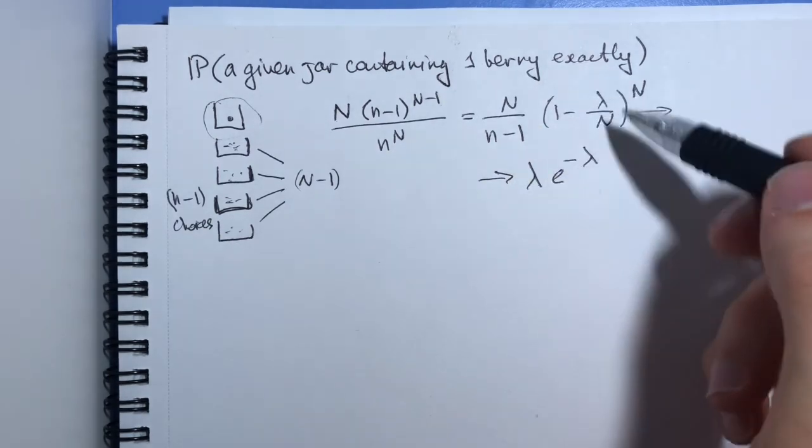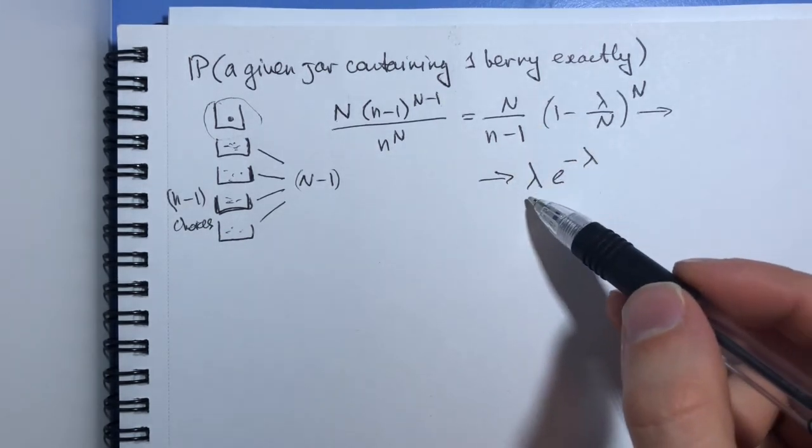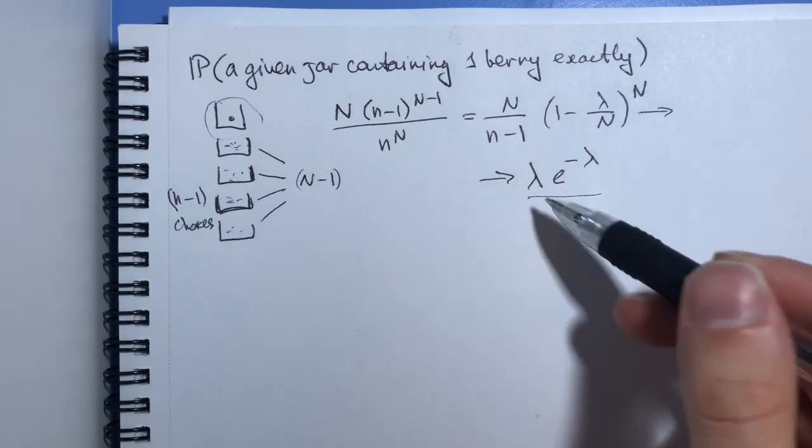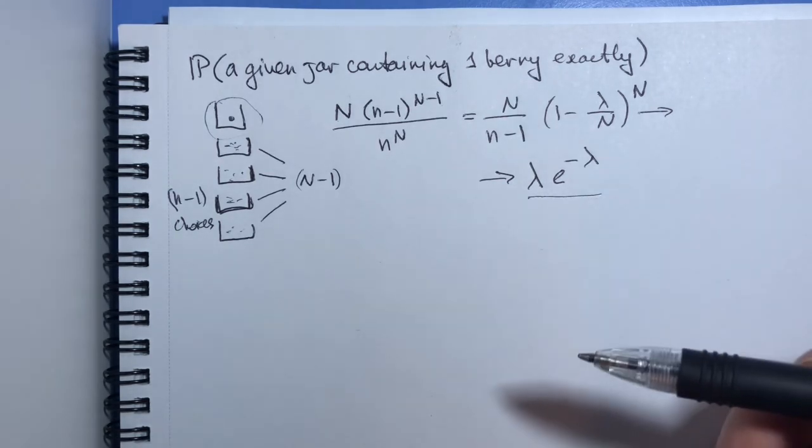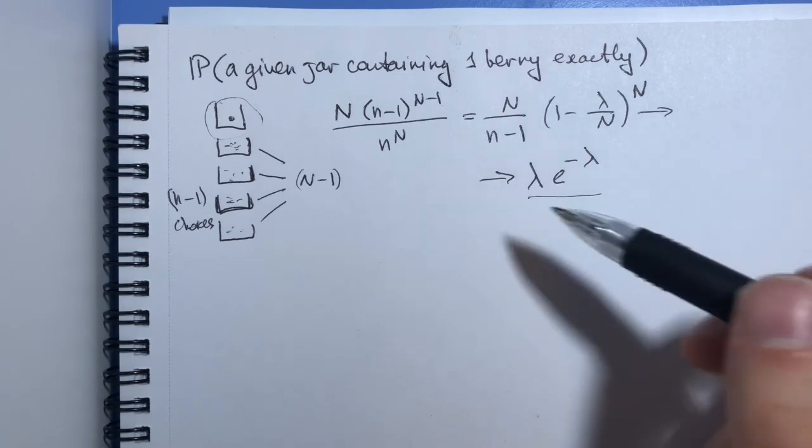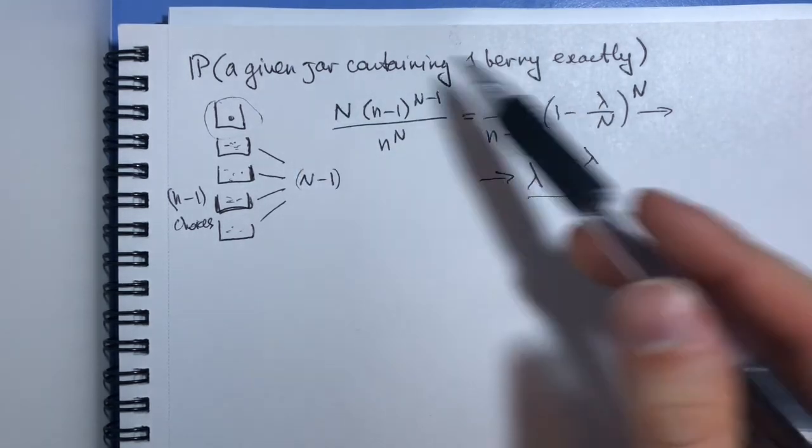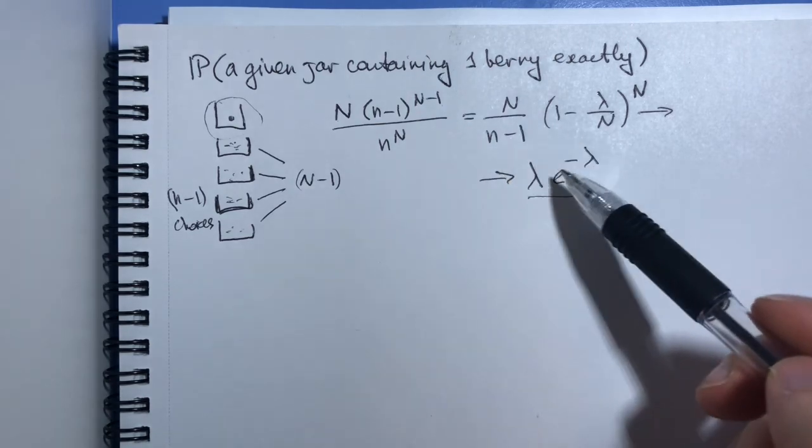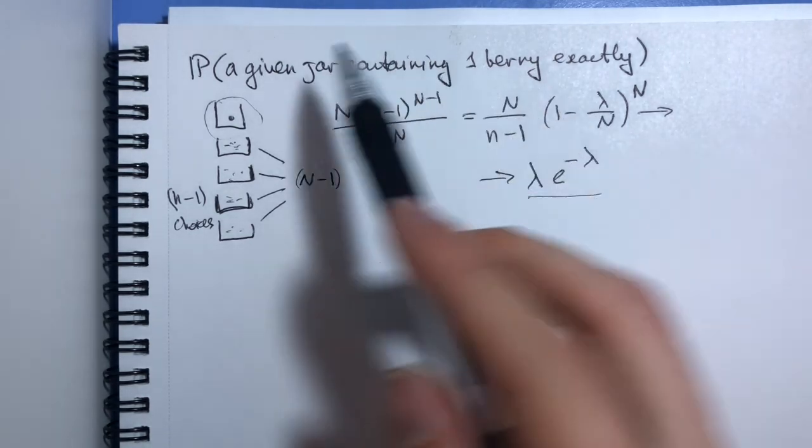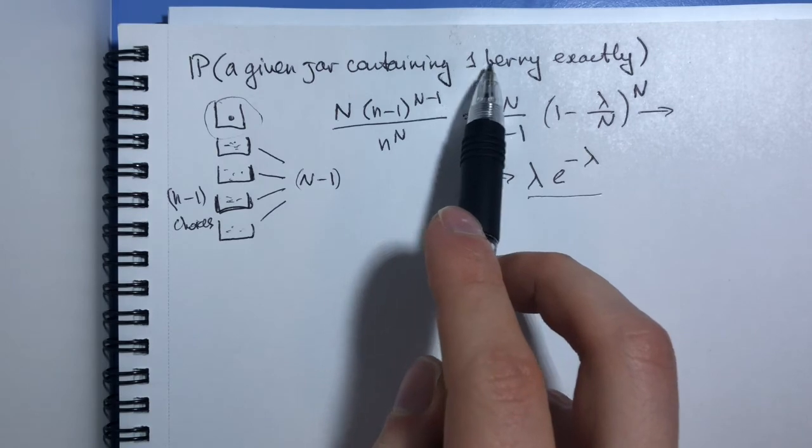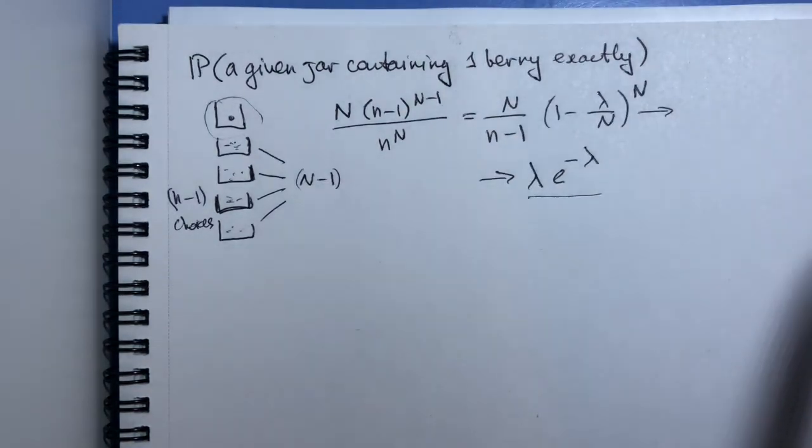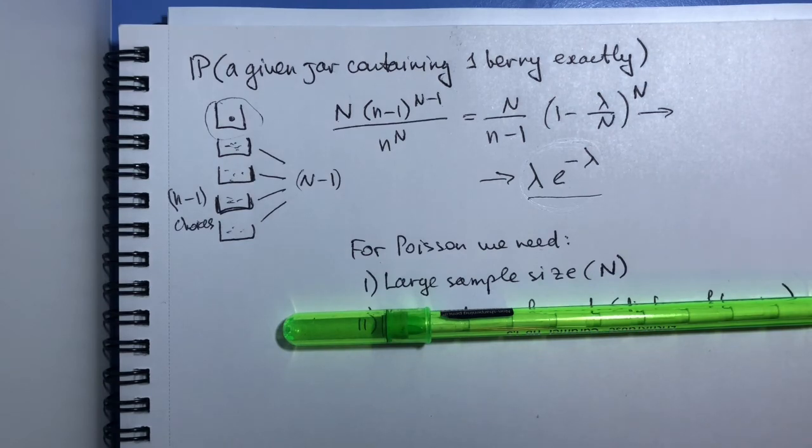So you can see how for our example, our probabilities coincide with what you have seen in the Poisson distribution formula. So it is now an exercise for you to derive a formula for a given jar containing k berries and see that it is equivalent to the way you have seen this distribution defined.